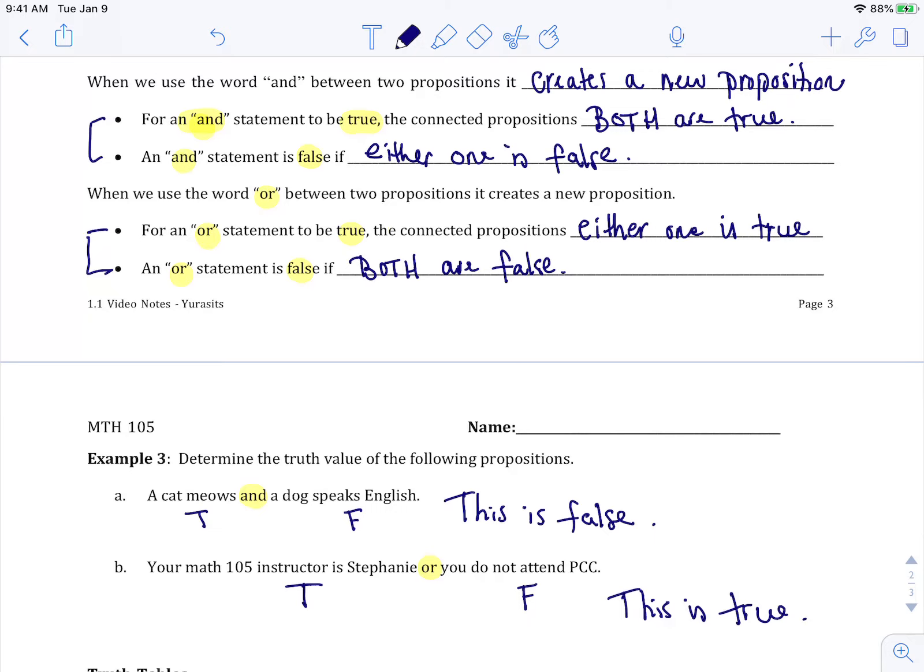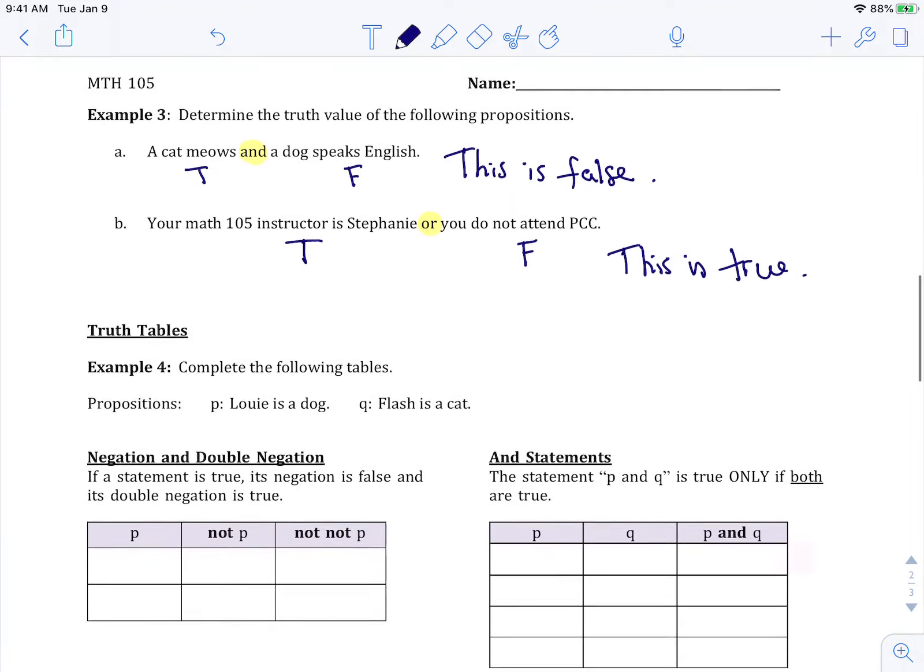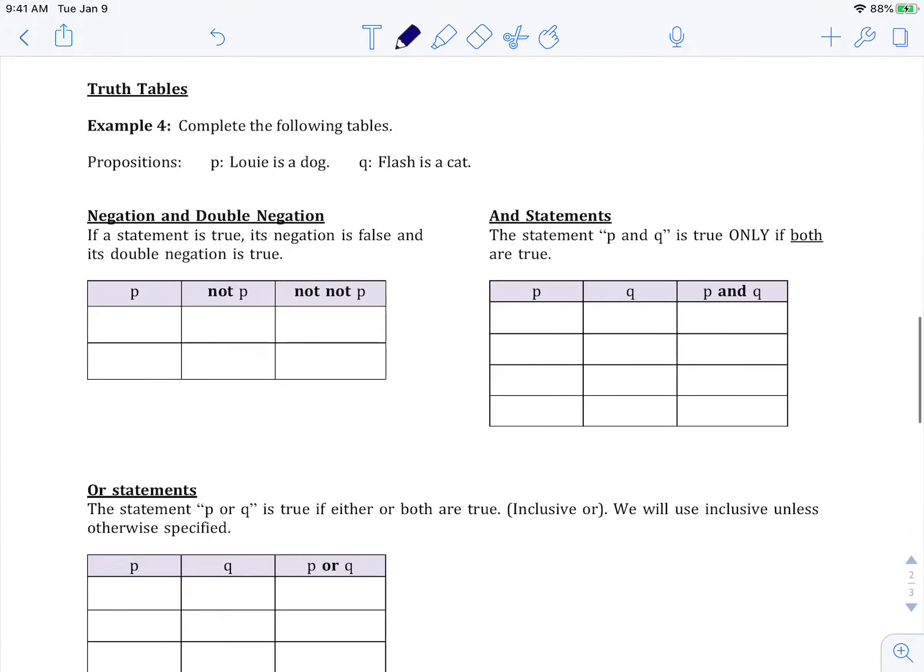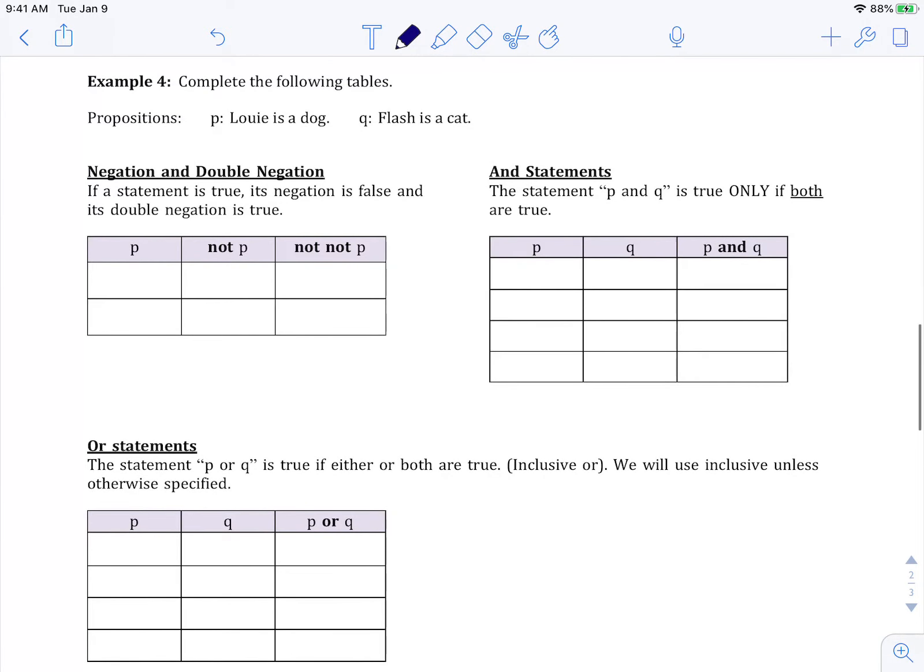Now we're going to use this information to do some truth tables. So example four says complete the following tables and I'm just going to move it up more so I can see everything. I'm going to claim I have these two propositions. One is P, which claims Louie is a dog. If you remember when I introduced you to my animals in the intro video, Louie is my dog's name. And Q, Flash is a cat. Flash is my cat's name.